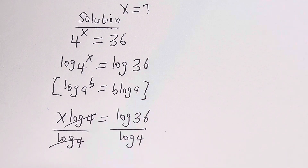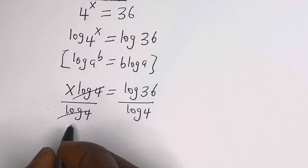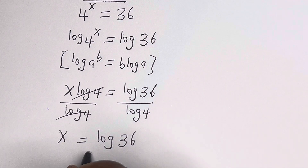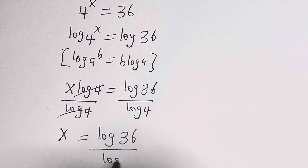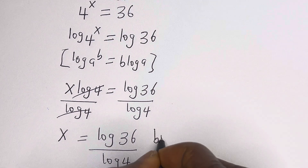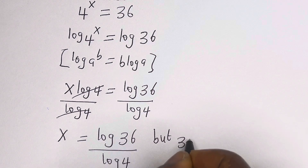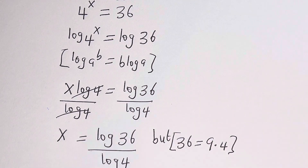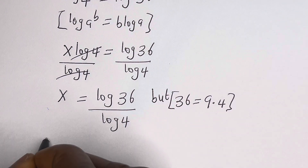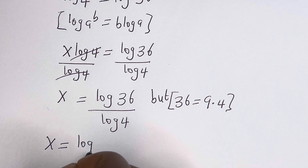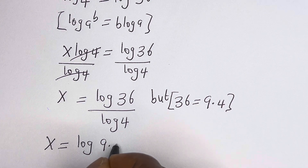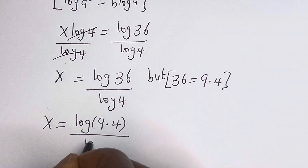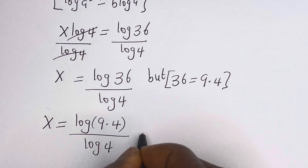Log 4 cancels log 4, so s is equal to log 36 divided by log 4. But 36 is equal to 9 multiplied by 4, so s is equal to log(9 × 4) over log 4.